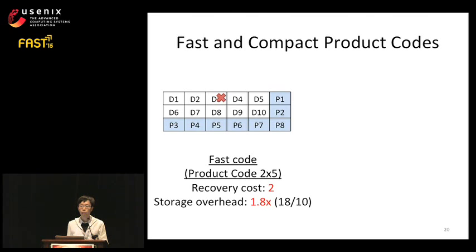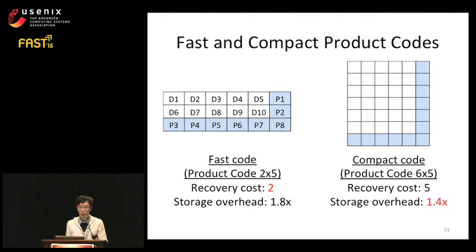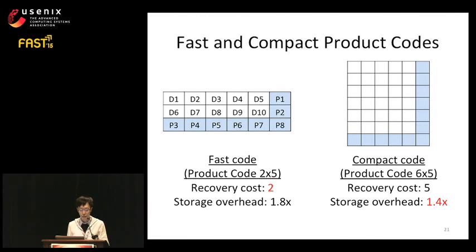This 2x5 code, when there is a single failure, gives us two choices to recover: take the column or take the row. We choose the column because we only need to transfer 2 data blocks to recover. On the contrary, we also have a compact code using a larger matrix for lower storage overhead at a cost of higher recovery cost. Here we use the 6x5 product code, which reduces storage overhead to 1.4x at a recovery cost of 5.